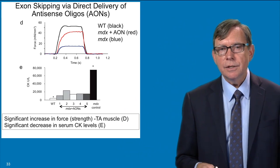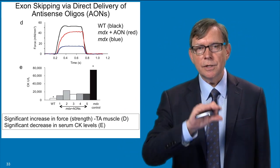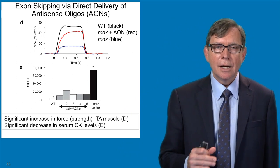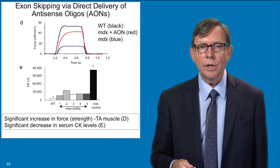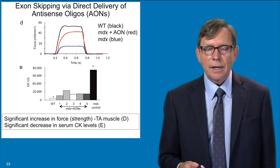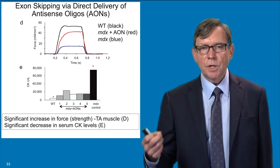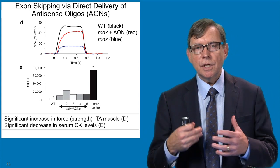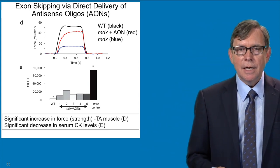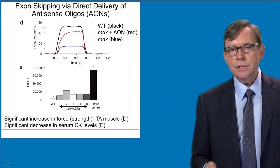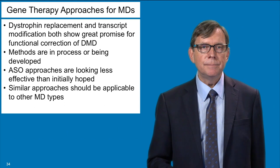Panel D is looking at the strength of the muscles — again, red is the treated muscles — it's getting close to the normal level but it's not quite all the way there. Panel E shows another assay for muscle function — in this case, we're looking at the leakage of enzymes out of muscle into the bloodstream, and the amount of leakage is significantly lower in the treated animals than in the non-treated animals.